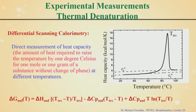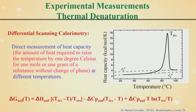For thermal denaturation, with respect to temperature versus heat capacity, you measure the amount of heat required to raise the temperature by 1 degree Celsius per gram of substance without any change in phase. As temperature increases, you reach the melting temperature — Tm — where the protein starts to melt. You get delta Cp from the difference between Cp in the unfolded state and Cp in the native state. Using delta Cp and Tm, you can calculate delta G at any temperature.